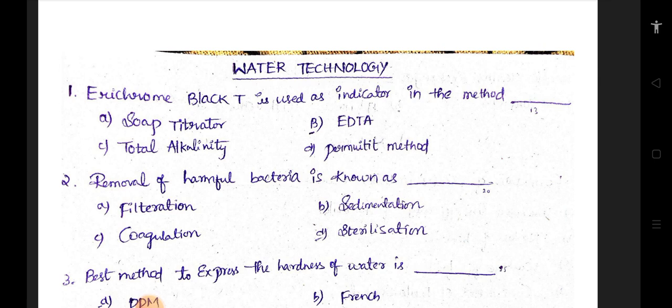This is an indicator. Eriochrome Black T is used as an indicator in the method - soap titrator, EDTA, or permutation method. You can use it. If you want to choose a question, you can use it. Let's try the second question.